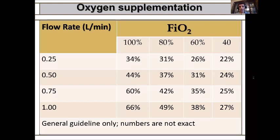This table illustrates the concept. For example, blending flow using medical air and oxygen: if oxygen is set at 100% with a flow of 1 L/min, the measured oxygen at the oropharynx is approximately 66%. At 0.25 L/min, the baby receives only about 34%. At 0.75 L/min with 40% oxygen, the patient receives only 25%. These are examples of set numbers versus what the patient actually receives.